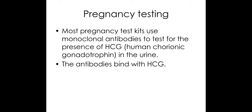The pregnancy testing that you do need to be aware of uses monoclonal antibodies. Mono means one and clonal means several of the same type of antibody. It uses monoclonal antibodies to detect if the hormone HCG — human chorionic gonadotrophin — is present, and you need to know how.